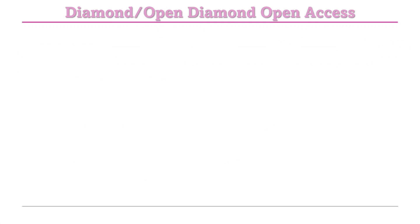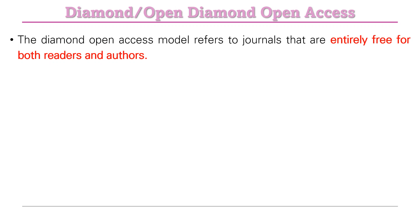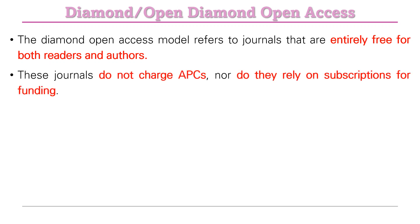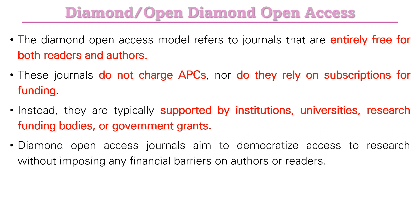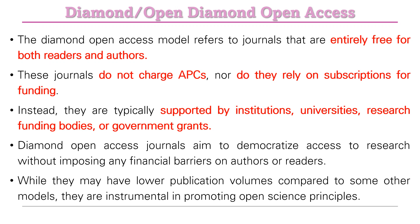The diamond open access model refers to journals that are entirely free for both readers and authors — no APC and no subscription charges apply. They are typically supported by institutions, universities, research funding bodies, or government grants. Diamond open access journals aim to democratize access to research without imposing any financial barrier on authors or readers. While they may have lower publication volumes compared to other models, they are instrumental in promoting science.